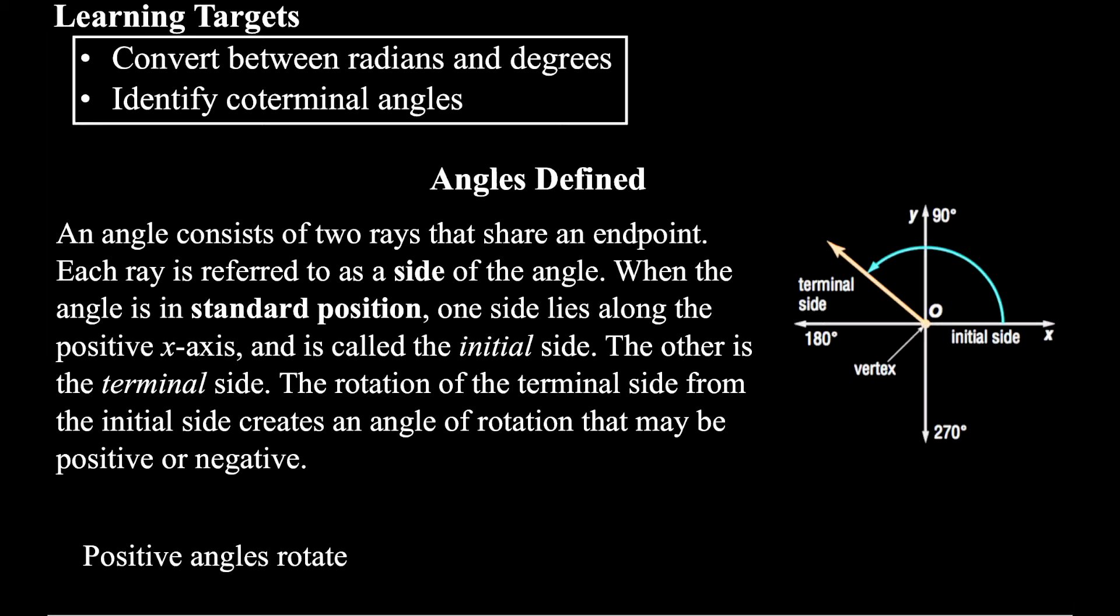So first of all, let's start off by defining what an angle is. And I think we all know what an angle is. From geometry you learned that angles are made up of two rays that are referred to as sides of the angle. They share a common endpoint which is also called the vertex of the angle here.